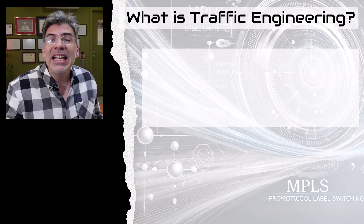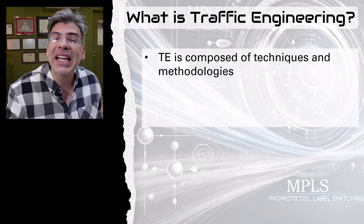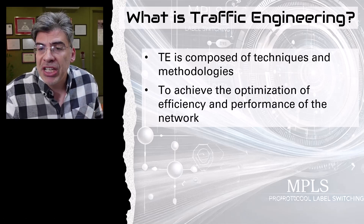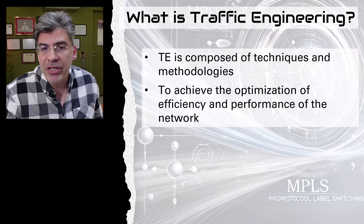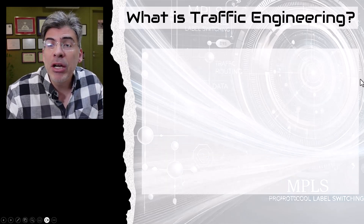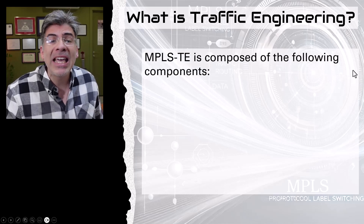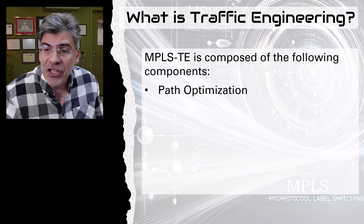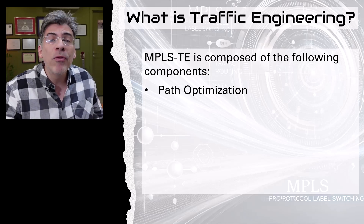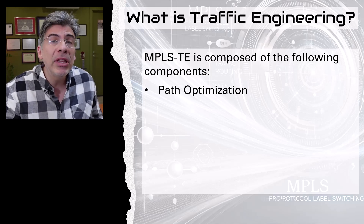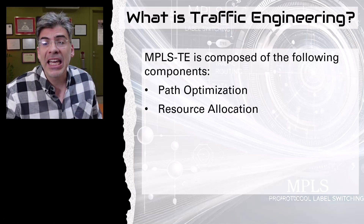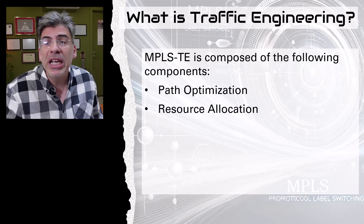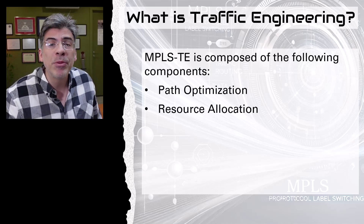So that's the why. Now what is traffic engineering? TE is composed of a whole series of techniques and methodologies used to achieve the optimization of efficiency and performance of the network. TE is composed of the following key components. The first is path optimization — TE ensures that traffic takes the most efficient paths through the network, avoiding overburdened links while directing traffic to less utilized links. Next is resource allocation — TE attempts to balance the use of network resources such as bandwidth, CPU, and memory to prevent bottlenecks and achieve optimal utilization.